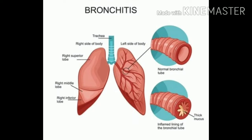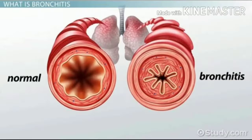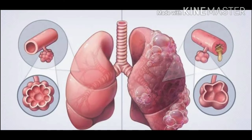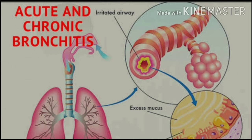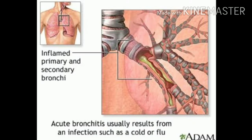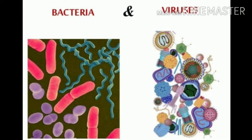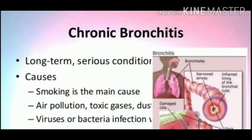Bronchitis is inflammation of the lining of the bronchial tubes, which carry air to and from the lungs. Bronchitis can be classified as acute bronchitis and chronic bronchitis. Acute bronchitis, also known as a chest cold, is short-term bronchitis that usually results from bacterial and viral exposure like cold or flu virus, coronavirus, etc.